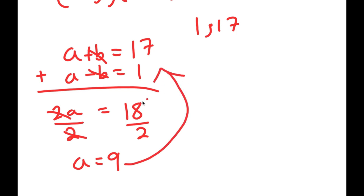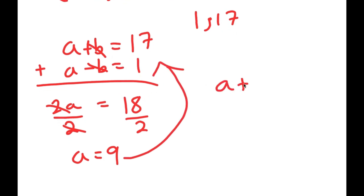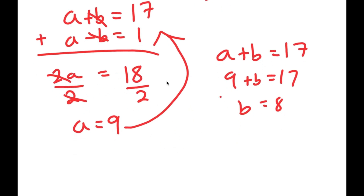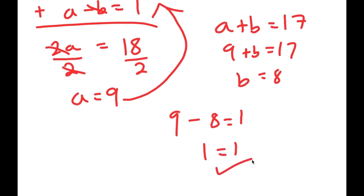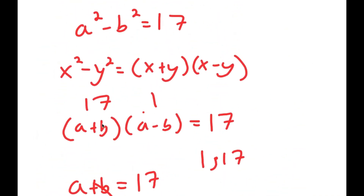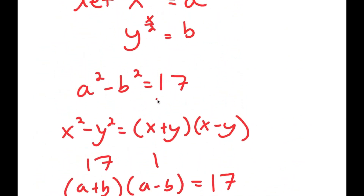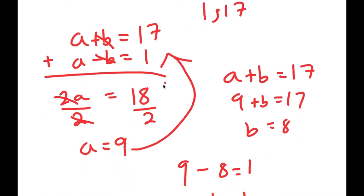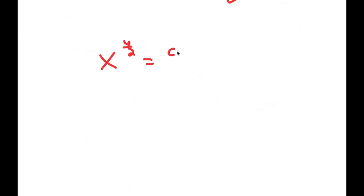Plugging a equals 9 back into a plus b equals 17, I get 9 plus b equals 17, meaning b equals 8. So a equals 9 and b equals 8. We can check: a minus b is 9 minus 8, which equals 1. Now, since we let a equal x to the power of y over 2 and b equal y to the power of x over 2, this means x to the power of y over 2 equals 9 and y to the power of x over 2 equals 8.